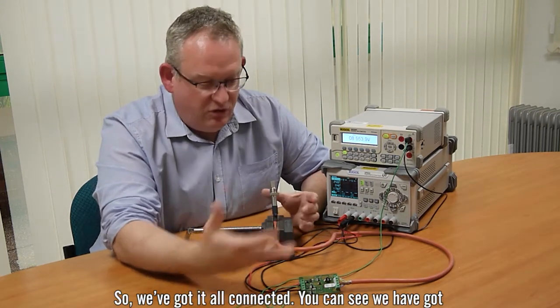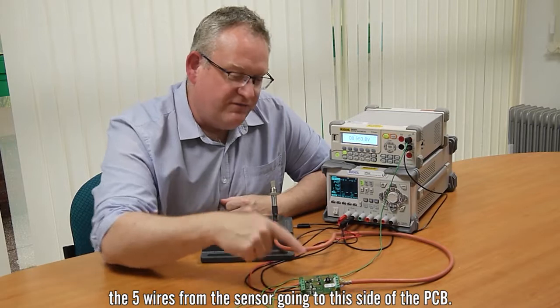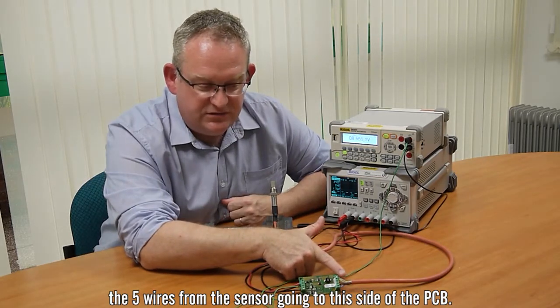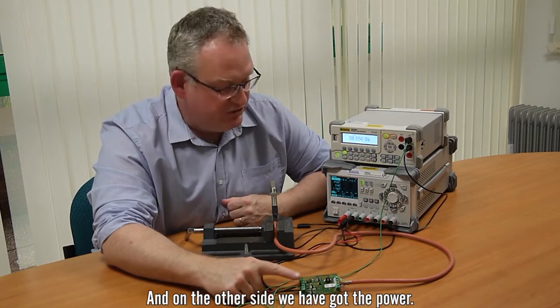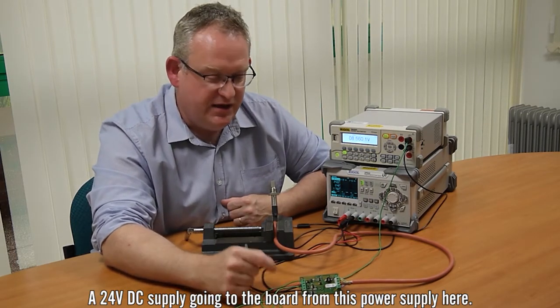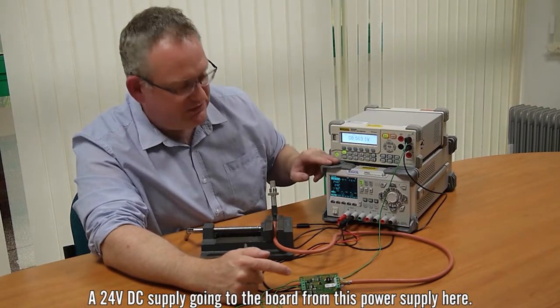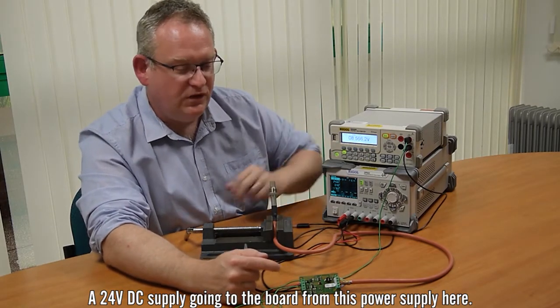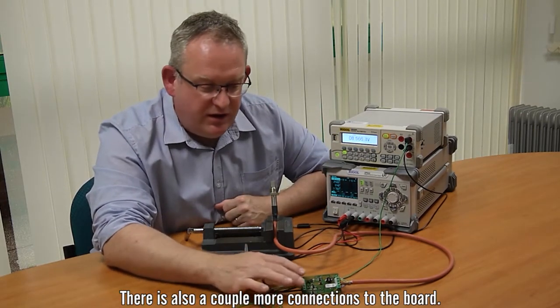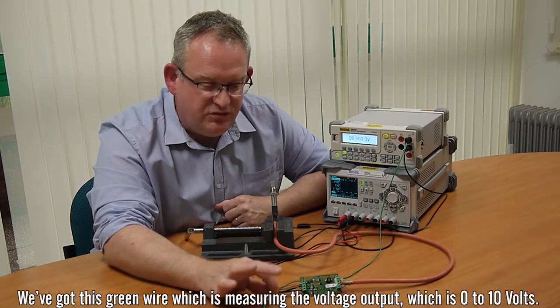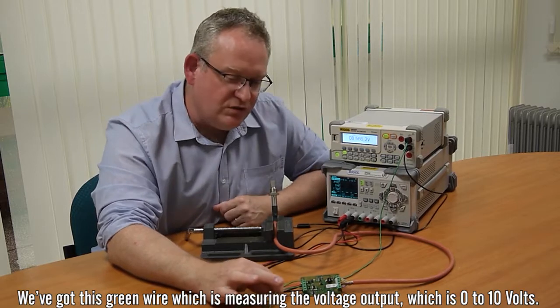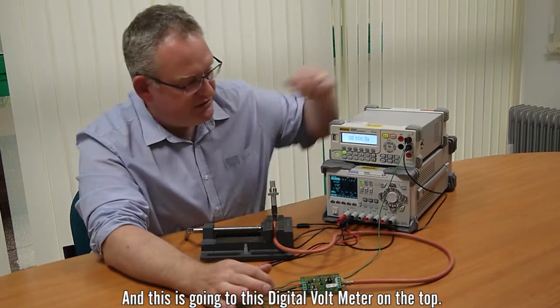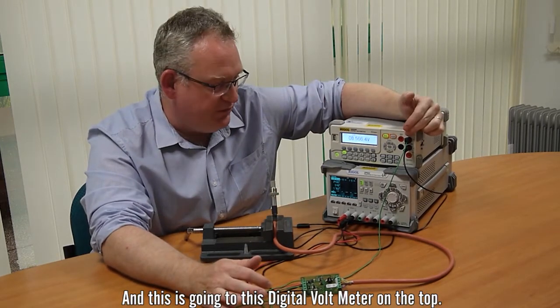So we've got it all connected up here, you can see we've got the five wires from the sensor going to this side of the PCB and on the other side we've got the power. So we've just got a 24 volt DC supply going to the board from this power supply here. There's also a couple more connections to the board, we've got this green wire which is measuring the output, the voltage output which is 0 to 10 volts and it's going to this digital voltmeter on the top here.